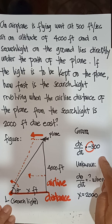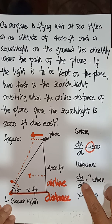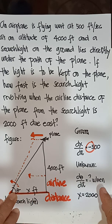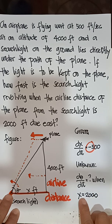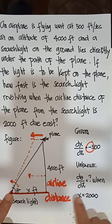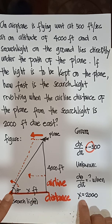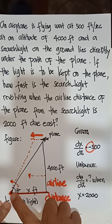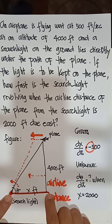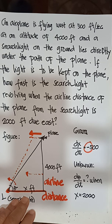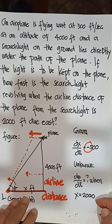The unknown is the change of the angle with respect to time — that is, d theta over dt — when the airline distance is equal to 2,000 feet due east. The measurement due east is from the searchlight as the origin.